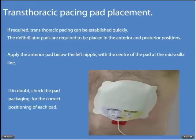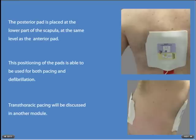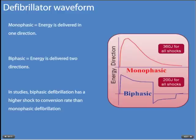Trans-thoracic pacing can be established quickly. The defibrillator pads are required to be placed in the anterior and posterior positions. Apply the anterior pad below the nipple with the center of the pad at the mid-axilla line. If in doubt, check the pad packaging for the correct positioning of each pad. The posterior pad is placed at the lower part of the scapula at the same level as the anterior pad. This positioning can be used for both pacing and defibrillation.